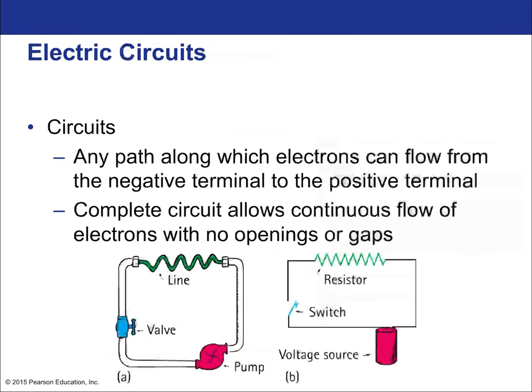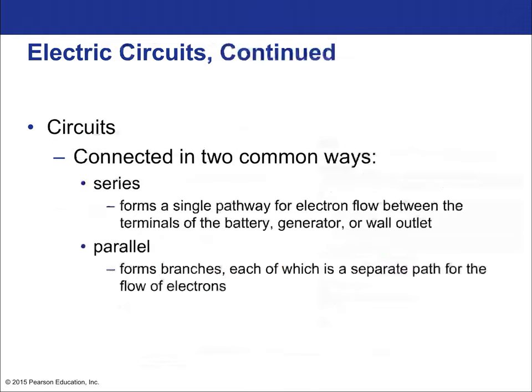Any path along which electrons can flow from the negative terminal to the positive terminal is considered a circuit. A complete circuit allows continuous flow — an open switch creates a broken or incomplete circuit. Circuits are connected in two common ways: series and parallel. Series is a single pathway; parallel has junctions. If there are any splits in your circuit, it has to be a parallel circuit. Series circuits are when there's just one continuous line.